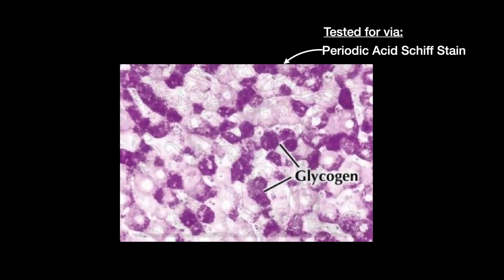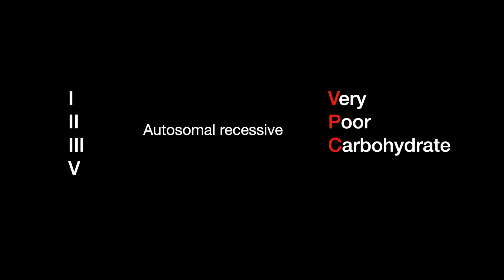The periodic acid-Schiff stain will stain the glycogen in the cells for visualization of glycogen levels. Here, we will talk about types 1, 2, 3, and 5, all of which are autosomal recessive and are a result of very poor carbohydrate metabolism: Von Gierke disease, Pompe disease, Cori disease, and McArdle disease.